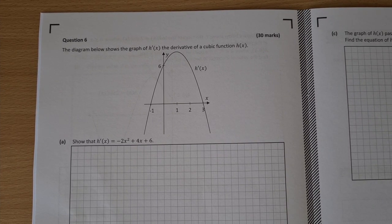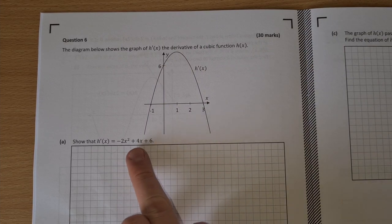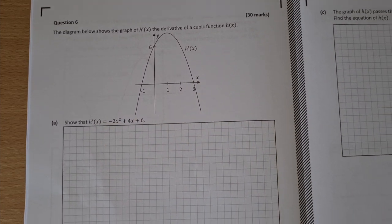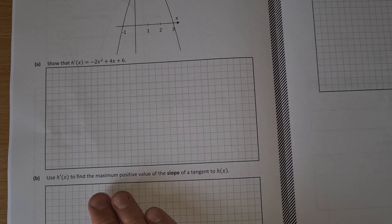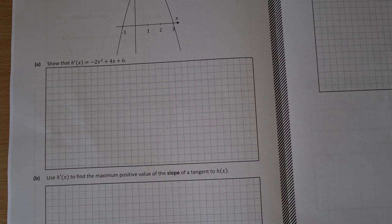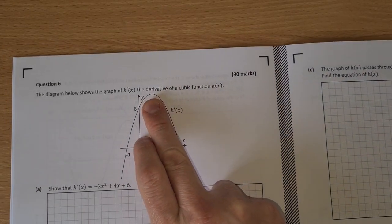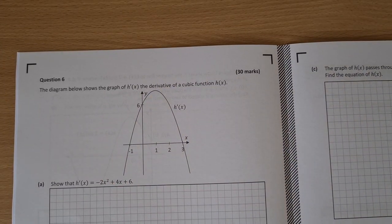Some more calculus. So this shows the derivative of the cubic function. Show that this is the derivative. So basically it doesn't matter that it's a derivative I suppose at the moment. You have a function here. Show that that's the function. Find a slope. Find the maximum positive value of the slope of the tangent. So that would be this up here. So where's the local max on that.